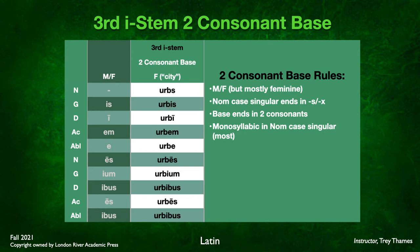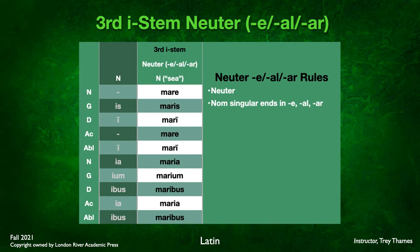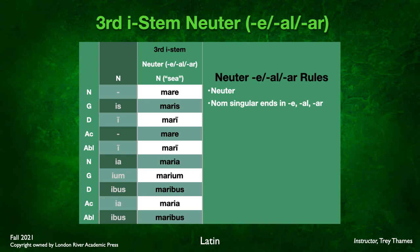The third category is neuter I-stem. It's simple: the gender is neuter and the nominative singular ends in E, AL, or AR. If those two criteria are met, use the third declension I-stem neuter endings. The example is mare (sea), which is neuter and ends in E. So the declension is: mare, maris, mari, mare, mari in the singular; maria, marium, maribus, maria, maribus in the plural.